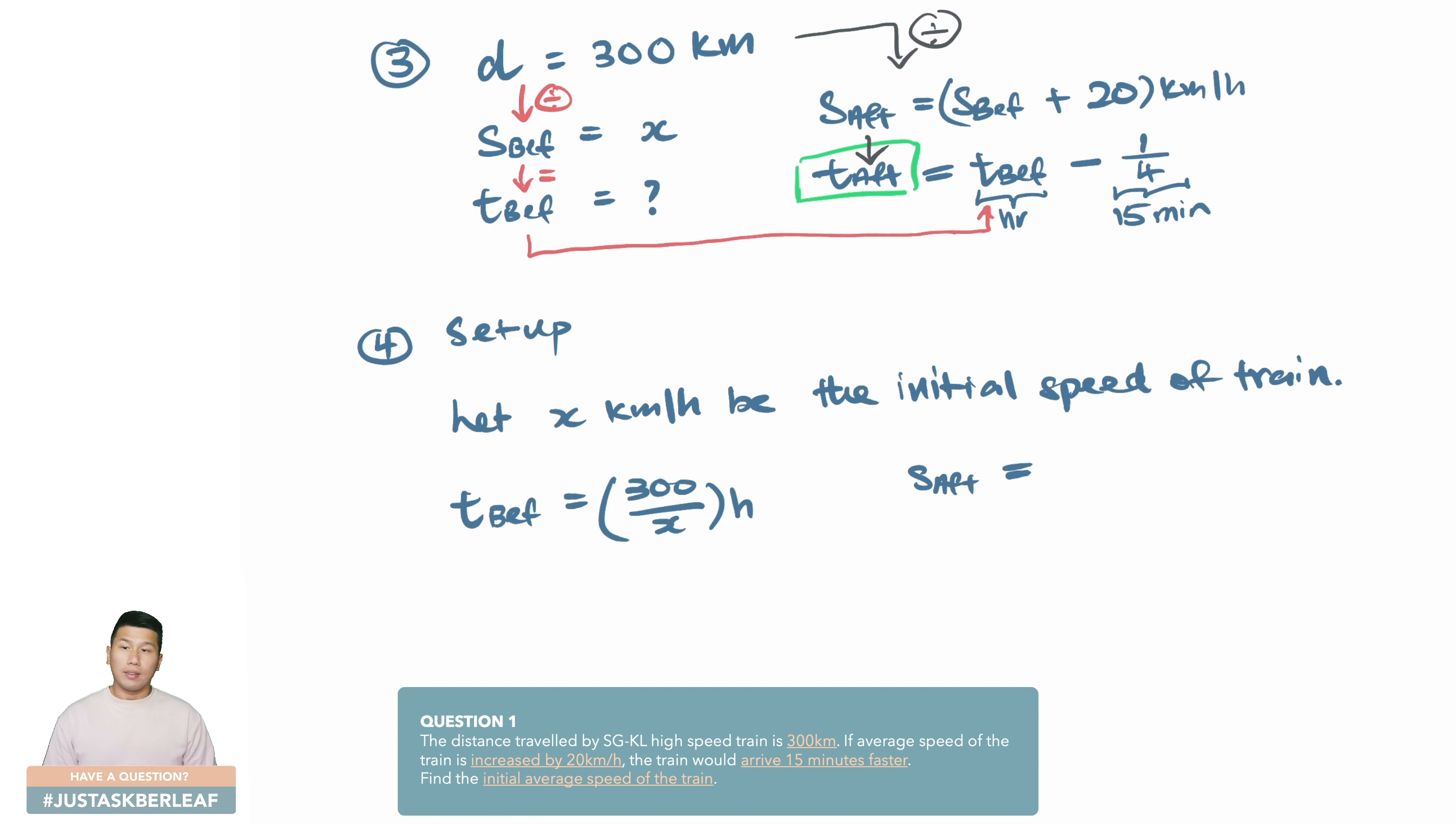With that, we shall move into mapping out or coming up with all the components required. Time before is equals to the 300 over x, which is in hours. Then we will have speed after is actually equivalent to x plus 20. Then we have time after, we will have to work this out by using 300 divided by the speed after, which is x plus 20. So we have hours here. We're having both sides of the equation. We can then write it out easily with the time after, which is 300 over x plus 20, being equivalent to the time before, 300 over x minus one quarter.